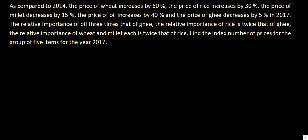Our next question: as compared to 2014, the price of wheat increases by 60% (index 160), rice increases by 30% (index 130), millet decreases by 15% (index 85), oil increases by 40% (index 140), and ghee decreases by 5% (index 95) in 2017. The relative importance of oil is three times that of ghee.